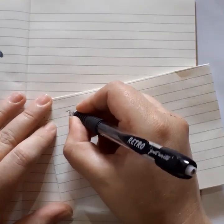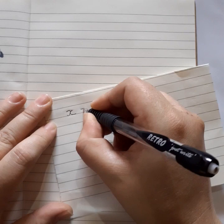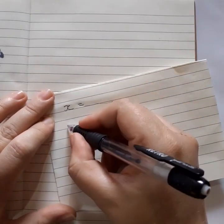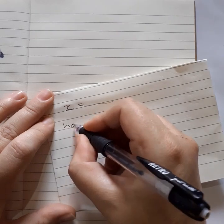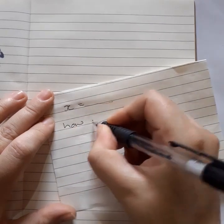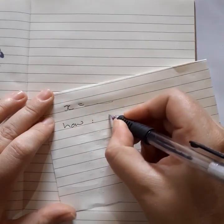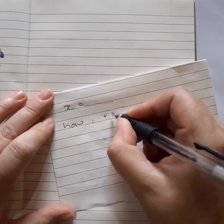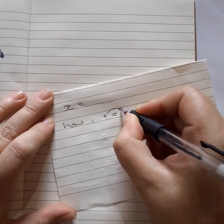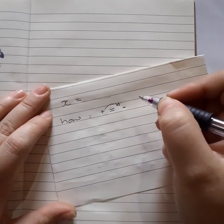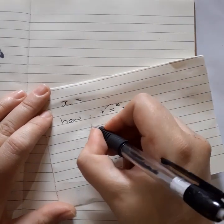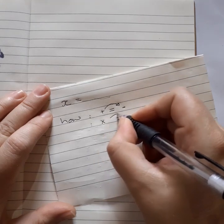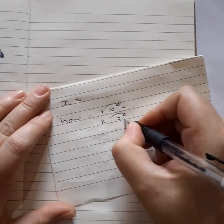So first of all, you want to get x equals and everything else on the other side. How are we going to do that? We're going to take things over the equal sign. If a plus goes over the equal sign, it becomes a minus.